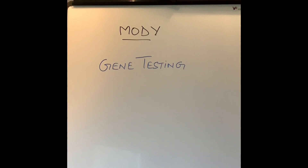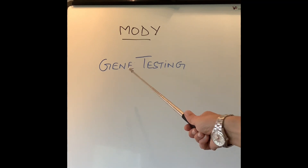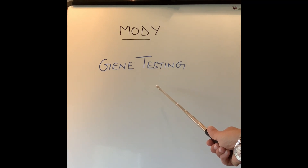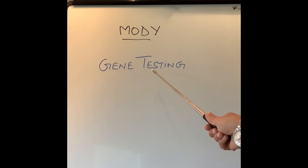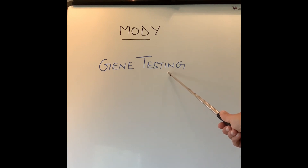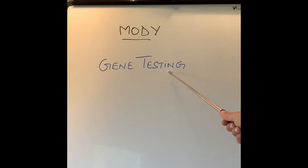If someone suspects they have MODY rather than type 1 or type 2 diabetes — because they have a family history of diabetes in their grandparents, parents, or one or two siblings — they can speak to their doctor. The doctor can do a special blood test to check whether the genes I've described are defective, and they can also do a urine test to check for any defective protein. That is how MODY is picked up.